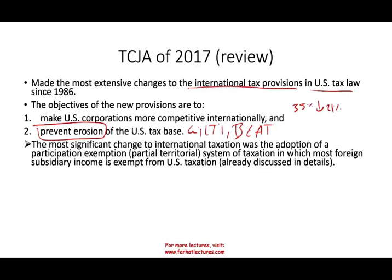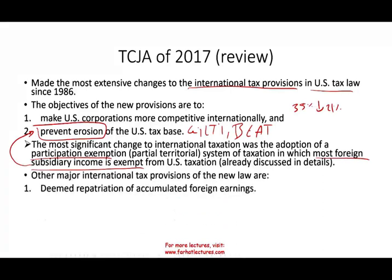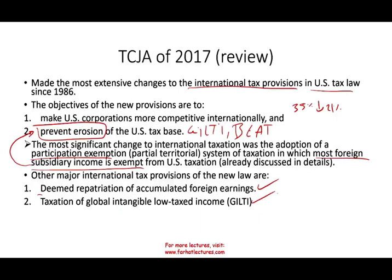The most significant change to international taxation was the adoption of the participation exemption — a partial territory system in which most foreign subsidiary income is exempt from U.S. taxation. But at the same time, the government introduced GILTI and BEAT to get some taxes out of you. The three most significant international tax provisions of the new law were: the deemed repatriation of accumulated foreign earnings, taxation of global intangible low-tax income (GILTI), and in this session, the imposition of a base erosion anti-abuse tax — BEAT.